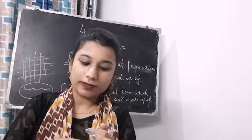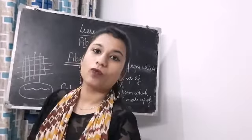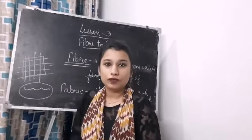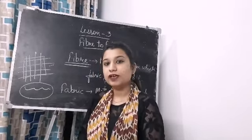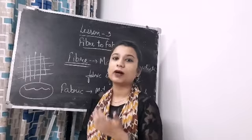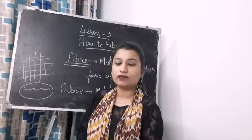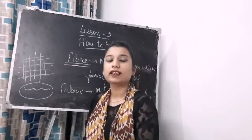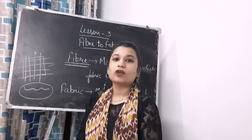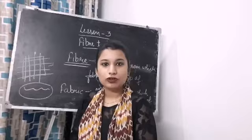So, fiber is a thin strand from which fabric is made, and fabric is the material from which our clothes are made. There are many types of fibers — natural fibers and synthetic fibers — that we will talk about later. I hope fibers and fabric is clear to all of you.